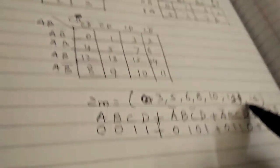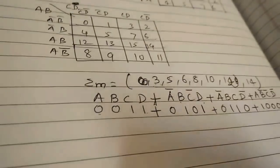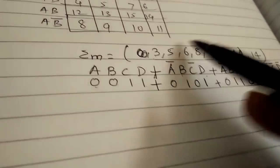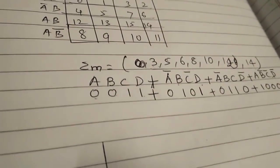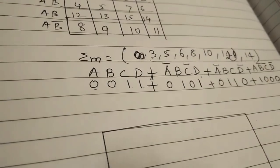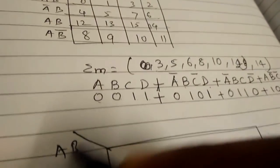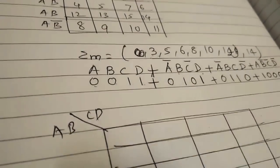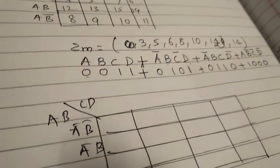Since the problem is given up to minterm 14, this is a four-by-four matrix for four inputs. We need to convert this sum-of-products expression into a simplified boolean expression using four inputs A, B, C, and D.